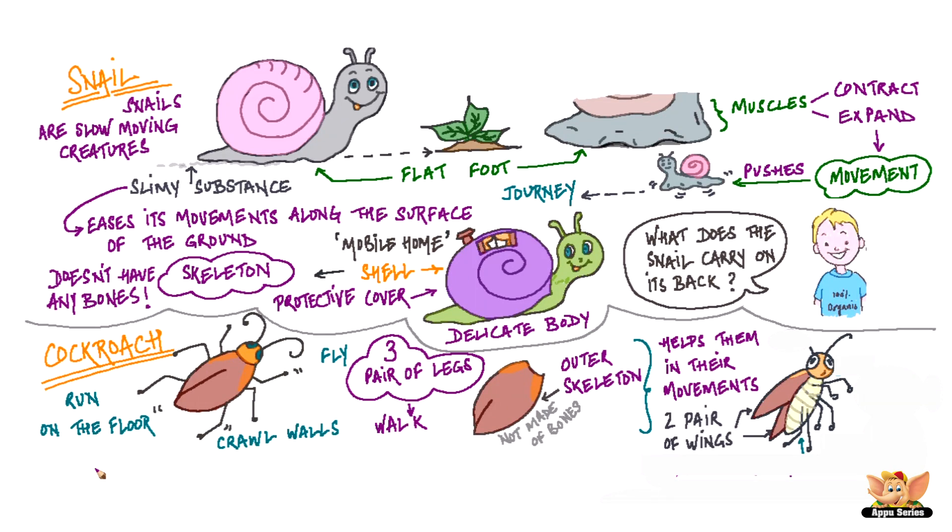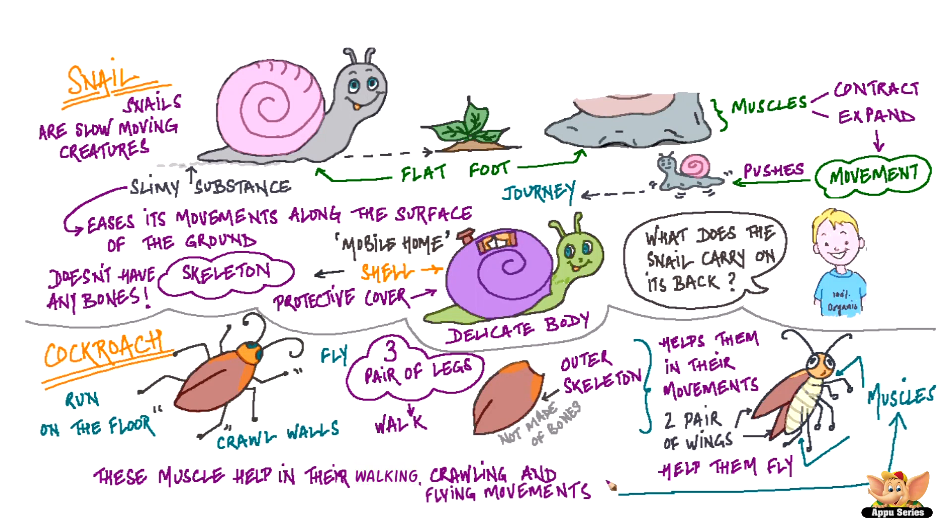Two pairs of wings attached to their sides help them fly. They have muscles by the side of their legs and on the sides of their body. These muscles help in their walking, crawling and flying movements.